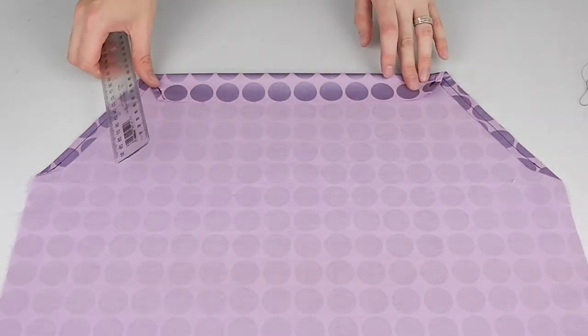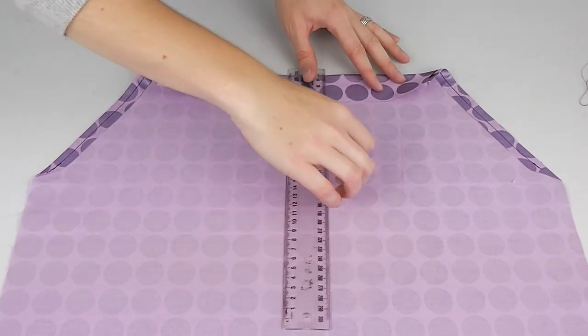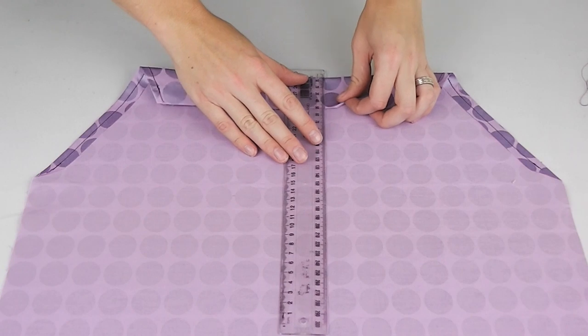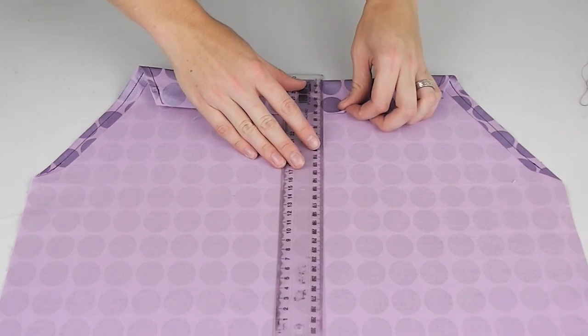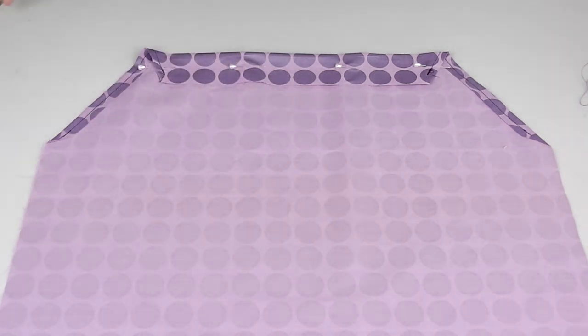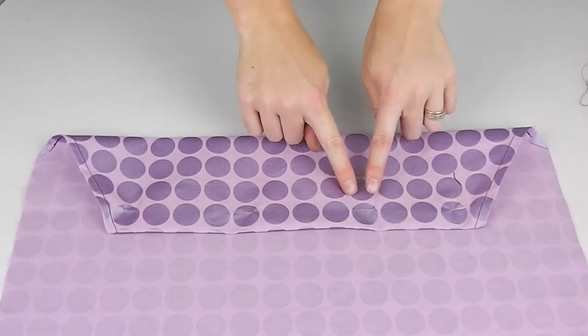To create our top seam fold the top piece down 5cm. This allows enough room to thread through our ribbon or ties. Pin in place and sew across this seam all the way across to the edges of the arm seams.